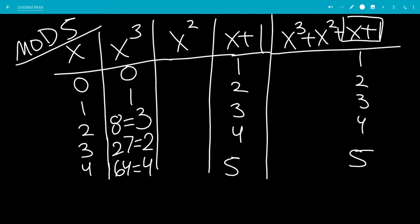Okay, so let's look at the x squared column. So we have 0 squared is 0, 1 squared is 1, 2 squared is 4, which we can leave the same because it's less than 5. 3 squared is 9, which is congruent to 4 mod 5. 4 squared is 16, which is congruent to 1 mod 5.